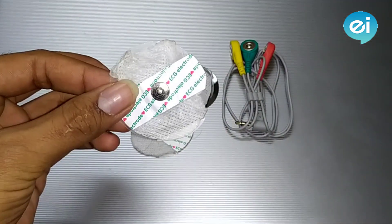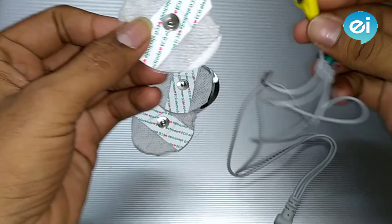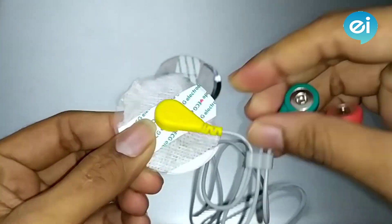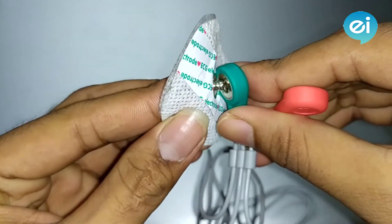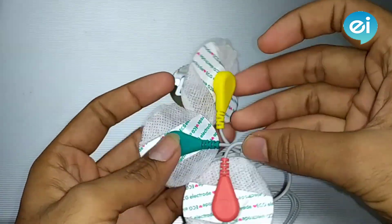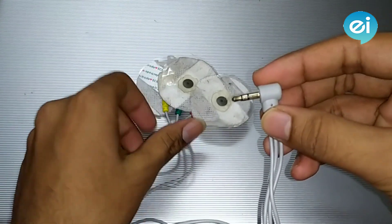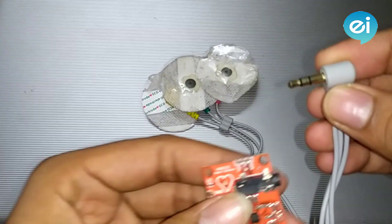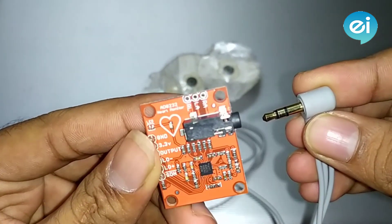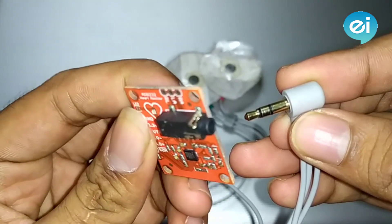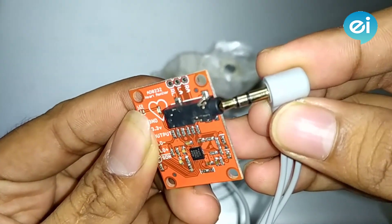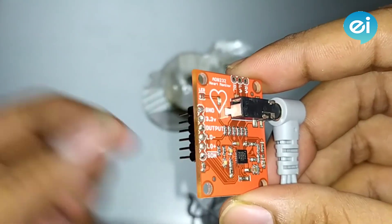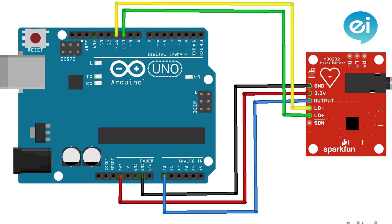Here we have both electrodes and their connectors. We need to make a connection between them. Repeat the same process for all three. On the other hand, we have a 3.5mm jack that needs to interface with the AD8232 breakout board — it has a 3.5mm female jack. Interface it like this. Here we have six pins to interface with the Arduino. Connect the circuit as shown in the diagram.